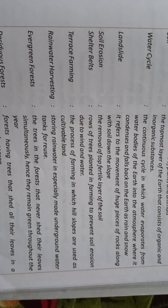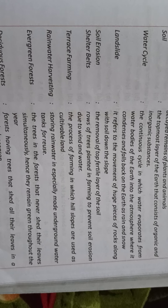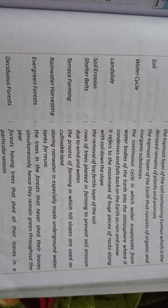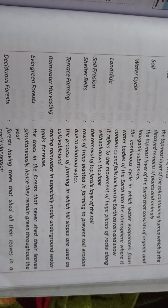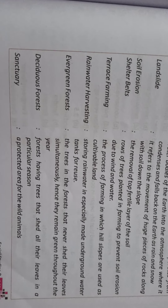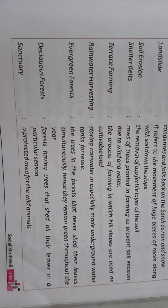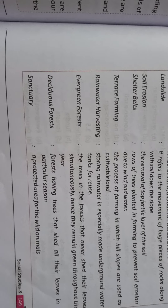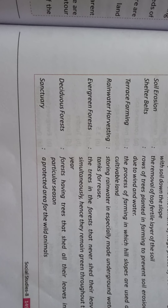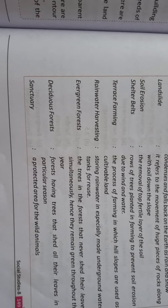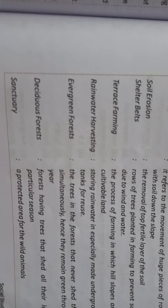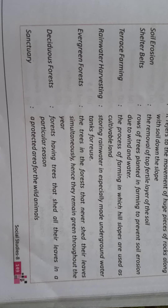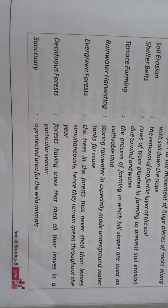Terrace farming: the process of farming in which hill slopes are used as cultivable land. Terrace farming wo hoti hai jahan par hill slopes ko cultivable land ki tarah use kiya jata hai farming ke liye. Rainwater harvesting: storing rainwater in specially made underground water tanks for reuse. Rainwater ko store karna taaki hum usse reuse kar sakein, uske liye special underground water tanks banae jaate hain.